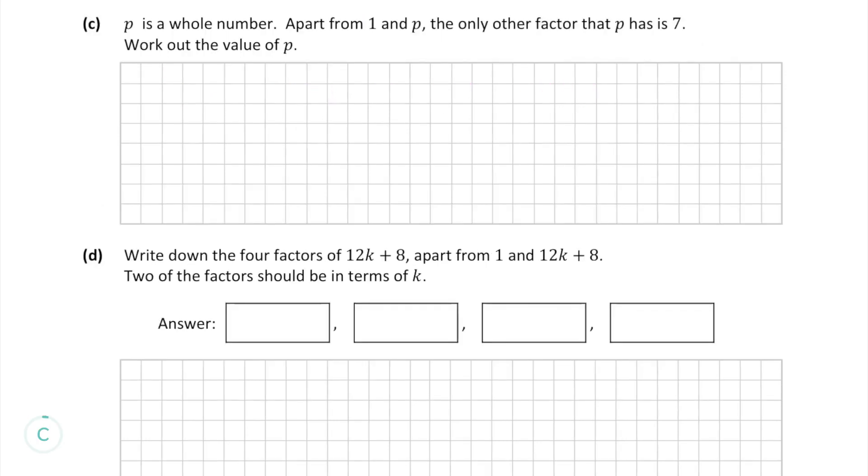In part c, we're told that p is a whole number, whose only other factor, other than 1 and p, is 7, and we have to work out the value of p. Since 7 is the only other factor, if we multiply 7 by any other number, then that other number must also be a factor, so in this case both numbers must be 7. So the number we're looking for is 49.